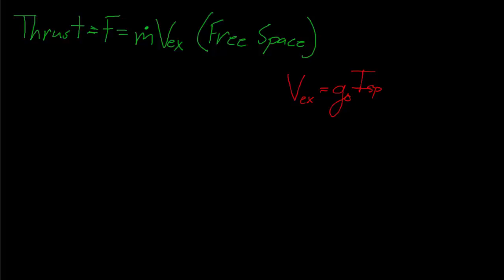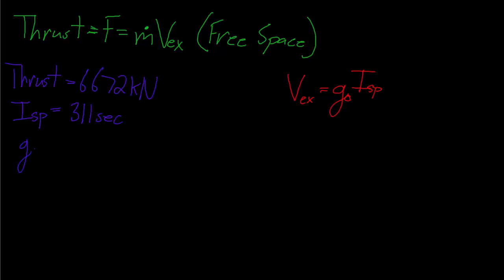We can do some examples with these two equations. The SpaceX Falcon 9 rocket, one of the most used rockets today, its first stage has a thrust of 6,672 kilonewtons. The specific impulse of this rocket is 311 seconds, and the gravitational acceleration on Earth is 9.8 meters per second squared. So now we have a specific impulse and a gravitational constant, so we can find our exhaust velocity.